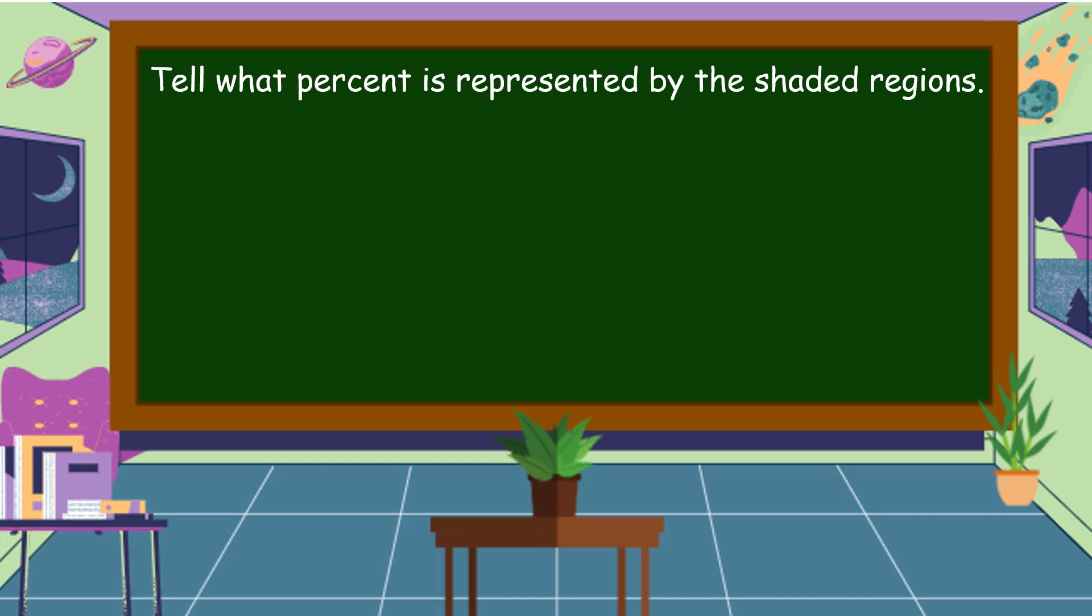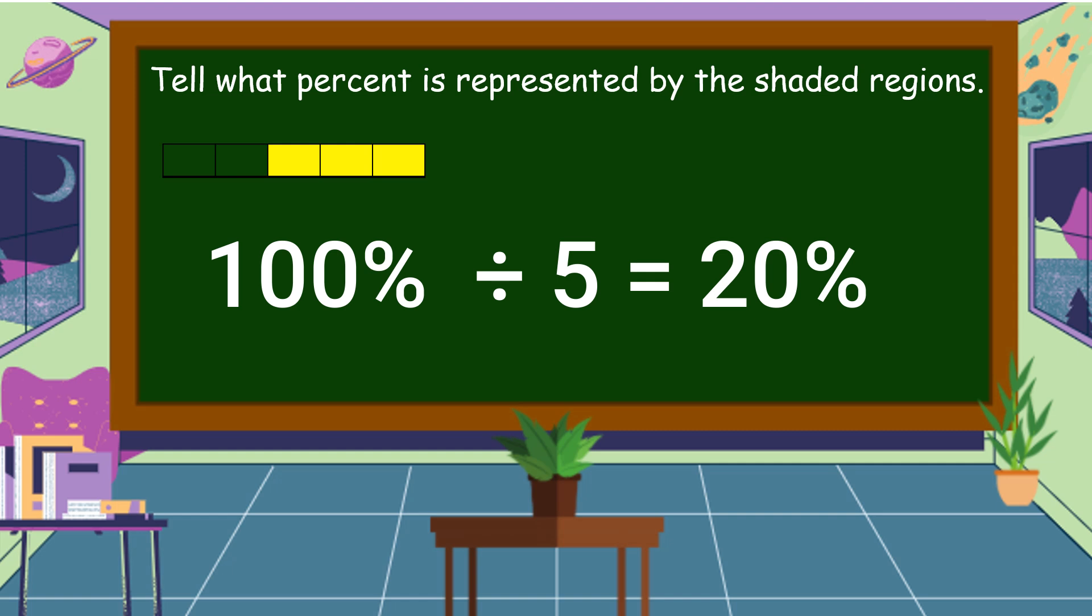So what percent is represented by the shaded regions? Observe the number of regions in this figure. This figure is divided into five equal parts. Take note that one figure is equal to 100 percent. So 100 percent divided by five is equal to 20 percent. Each region is equal to 20 percent. If there are three shaded parts, then what percent is the shaded regions? The answer is equal to 60 percent.